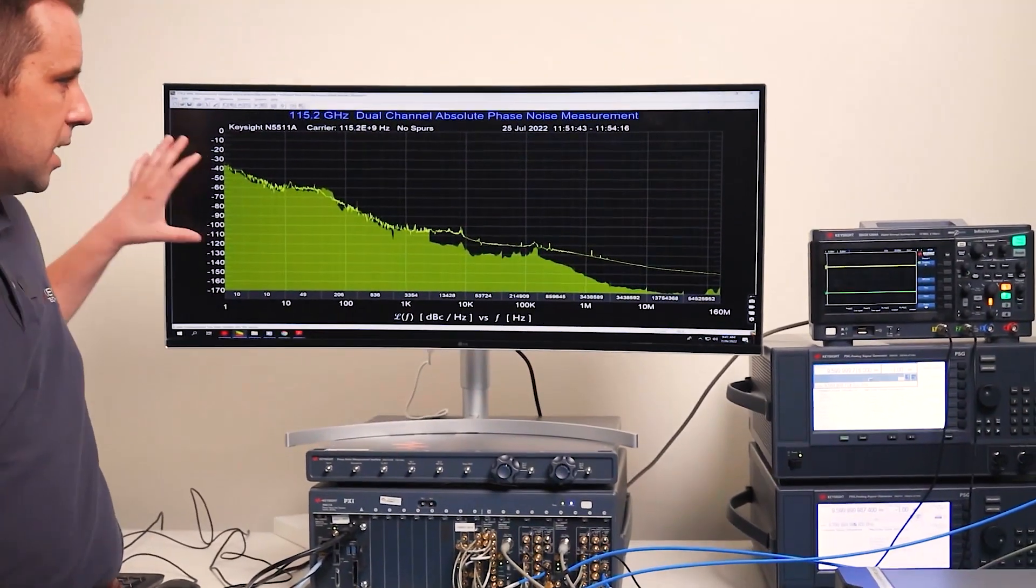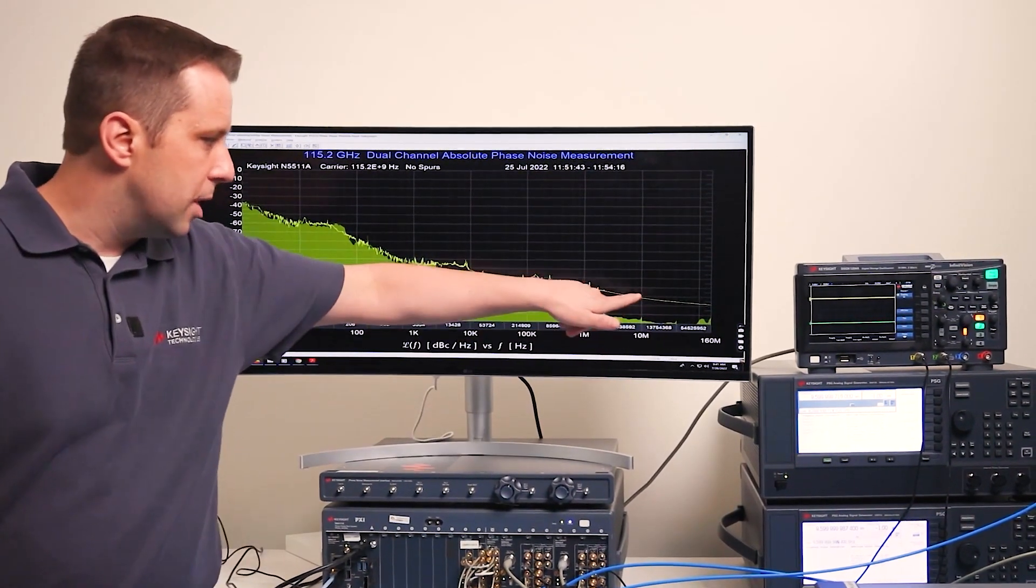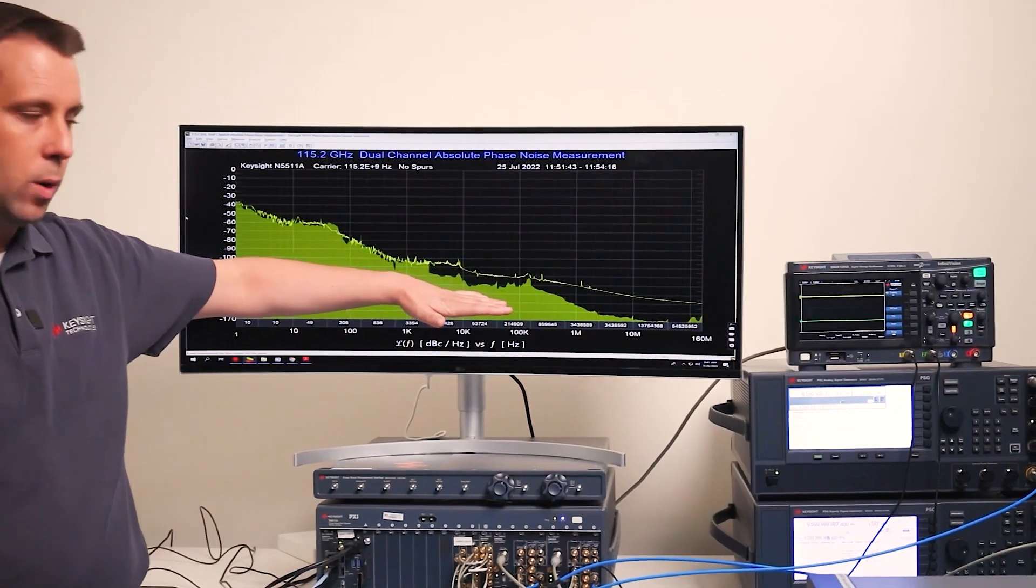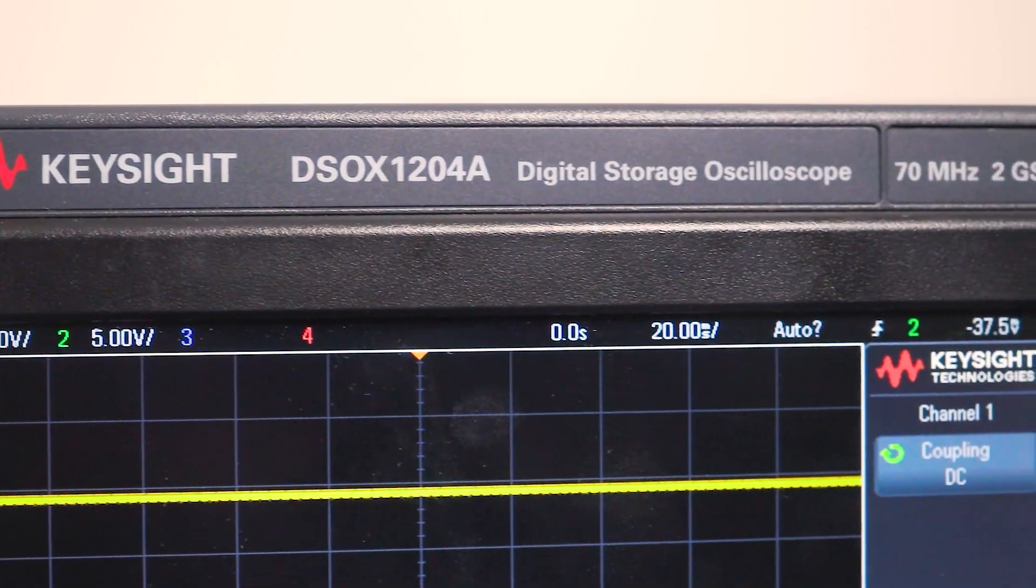As you can see, here's the N5510 software where you can see correlation number on the bottom, the measurement trace as well as the uncorrelated noise. And then we also have an oscilloscope here for measuring the beat note for the calibration process.